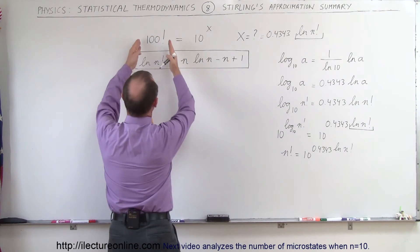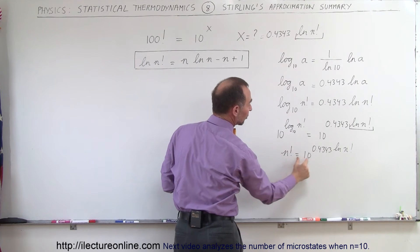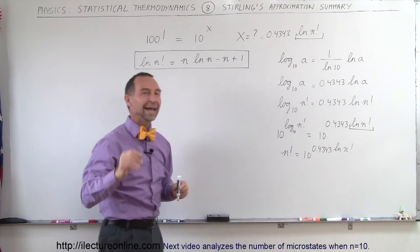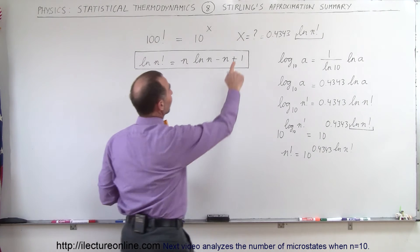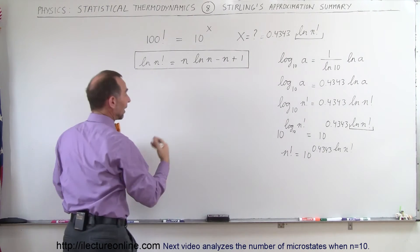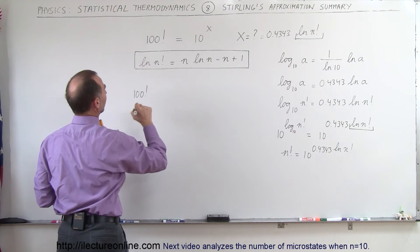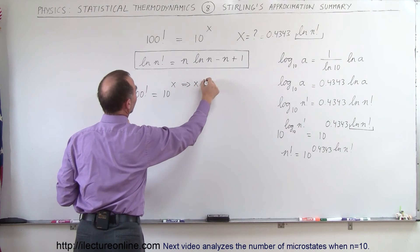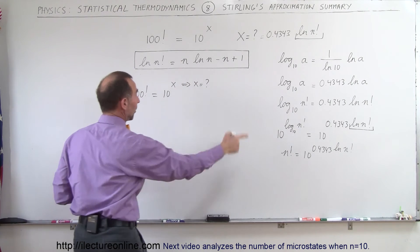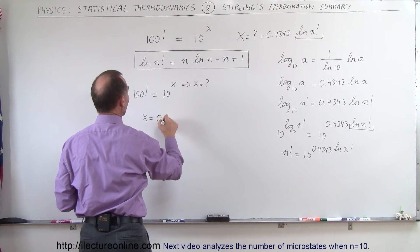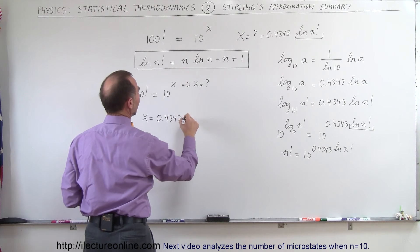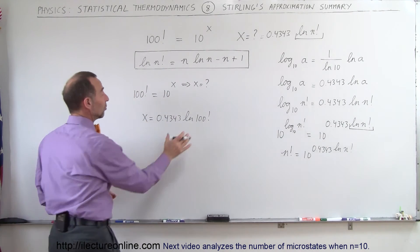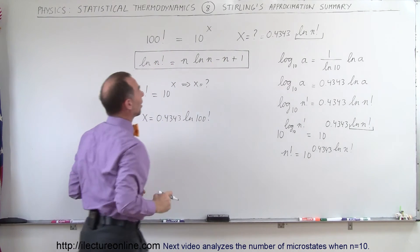If we replace n by 100, we can say that 100 factorial equals 10 raised to 0.4343 times the natural log of 100 factorial. That's how we use Stirling's approximation. So we can say that x is equal to 0.4343 times the natural log of 100 factorial — that's how we know what the exponent is. All we have to do is replace the natural log of 100 factorial with Stirling's approximation.